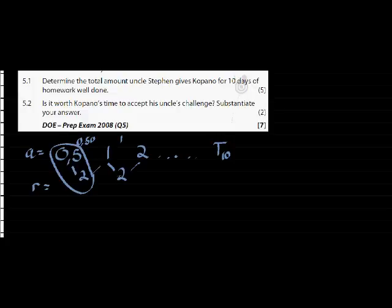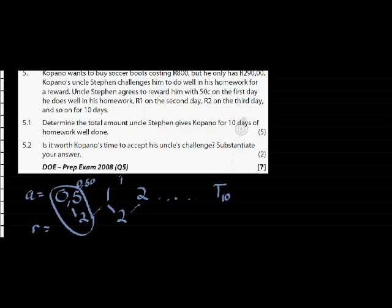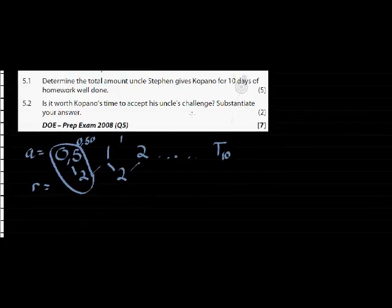And we want to work out... Let's look at the first question. Determine the total amount Stephen gives Kapano for 10 days of homework well done. So, in other words, the total amount means for the first day it got 50 cents, the next day it got 1 rand, but it was added. Every time it gets added, and it gets added all the way up to term 10, it gets added together.